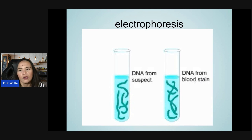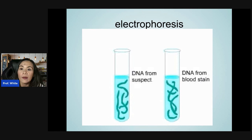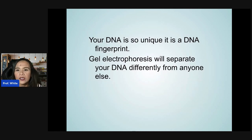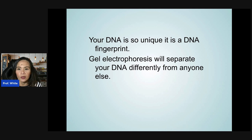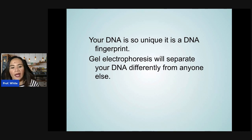Gel electrophoresis is very useful for comparing DNA from a suspect with DNA from a bloodstain at a crime scene, because your DNA is so unique it acts as a DNA fingerprint — gel electrophoresis will separate your DNA differently from anyone else's.